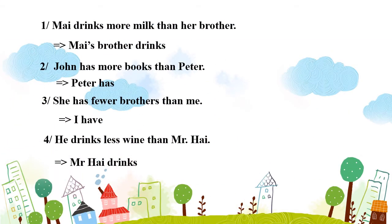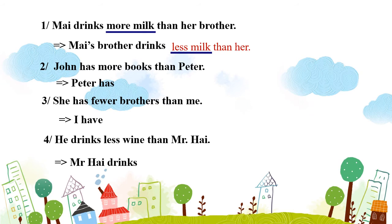Chúng ta sẽ làm bài tập về mẫu câu so sánh hơn của danh từ. Câu thứ nhất: "Mai drinks more milk than her brother." – Mai uống nhiều sữa hơn anh trai của cô ấy. Có nghĩa là anh trai của Mai uống ít sữa hơn Mai. Viết lại: "Her brother drinks less milk than Mai." Chúng ta thấy: more milk đổi thành less milk.